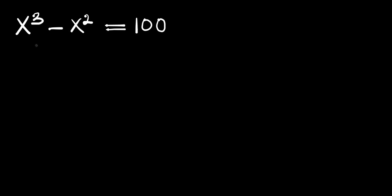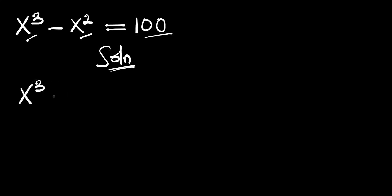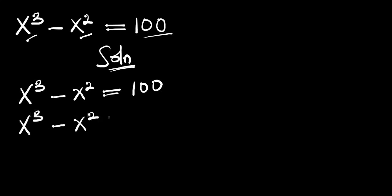Hello, in this video we have this exponential equation: x³ minus x² equals 100, and we are solving for all the real and complex solutions. We can rewrite this equation as x³ minus x² minus 100 equals 0.